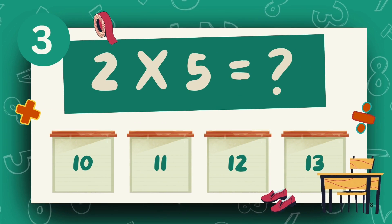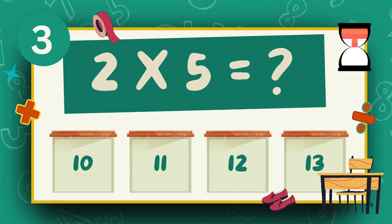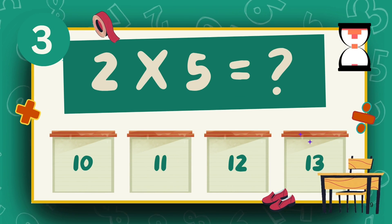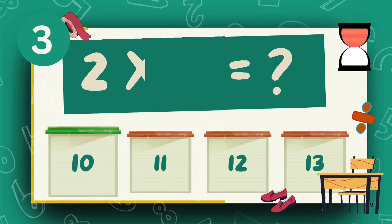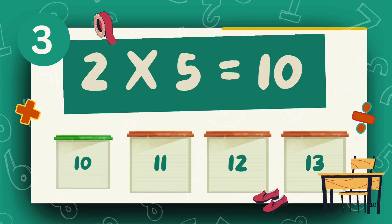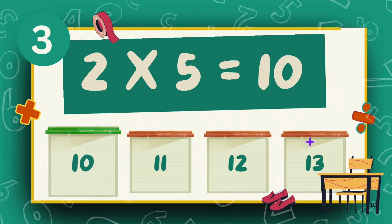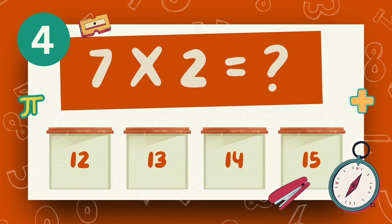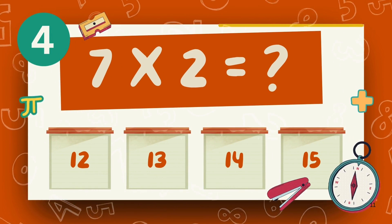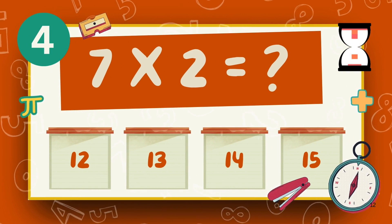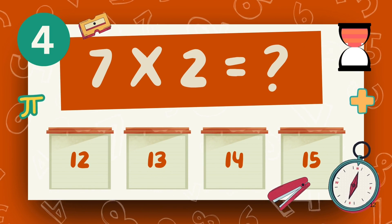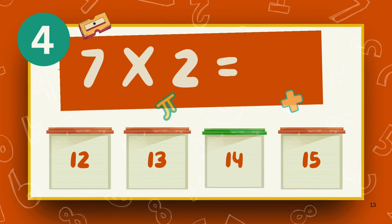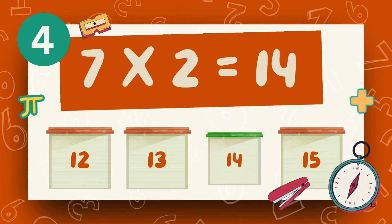What is 2 multiply 5? The answer is 10. What is 7 multiply 2? The answer is 14.